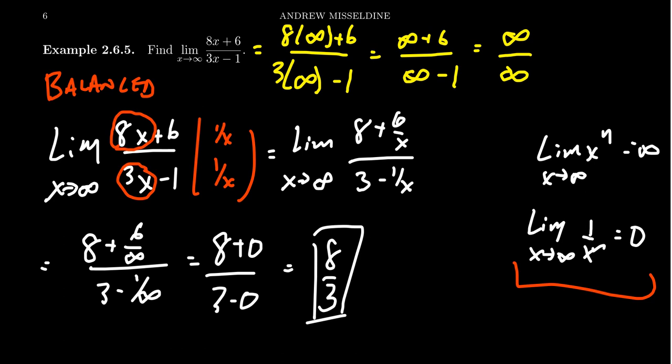You'll notice that 8 over 3 — those were the coefficients of the leading terms on top and bottom. This is something you see when you have a balanced rational function. If you take the coefficient of the numerator's leading term and the coefficient of the denominator's leading term, their ratio gives you the horizontal asymptote. This function has a horizontal asymptote at y equals 8 thirds, the ratio of their leading coefficients.